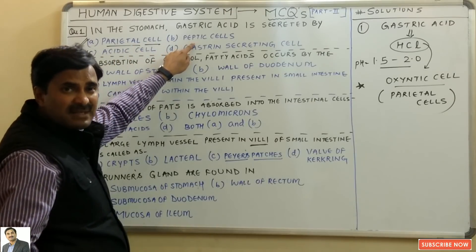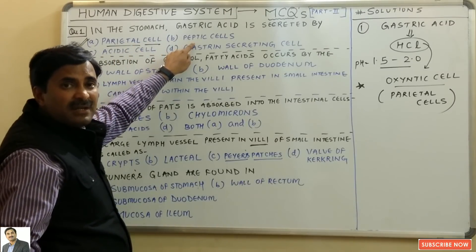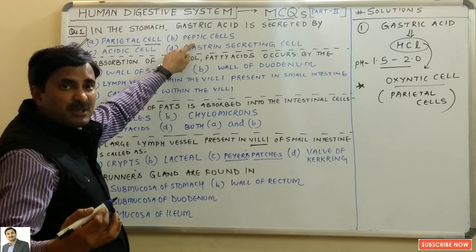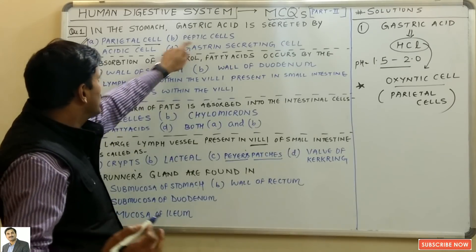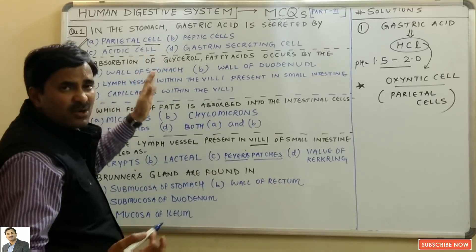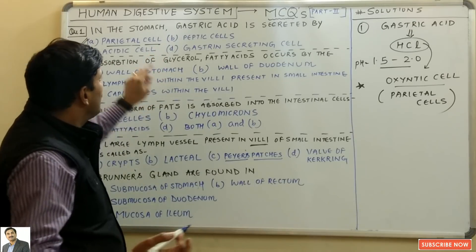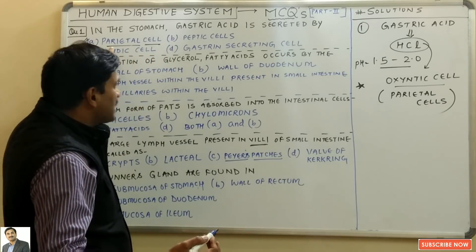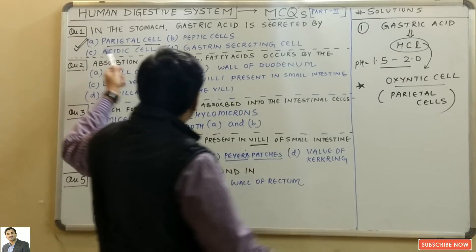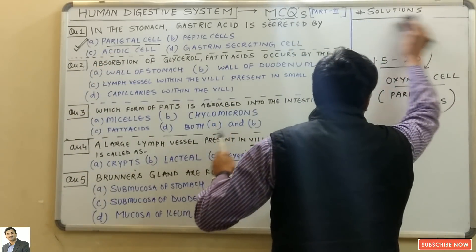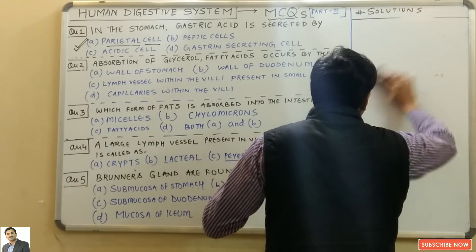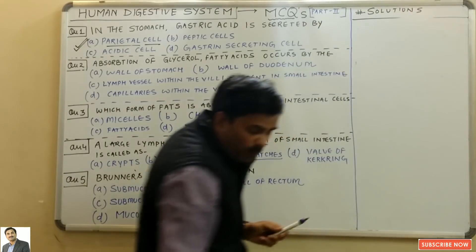Peptic cells, also called chief cells, release proenzymes known as pepsinogen and prorennin. So HCl is secreted by the parietal cells, and the answer to question one is A — parietal cells.